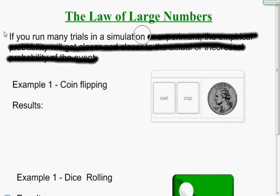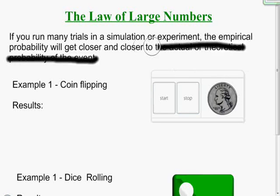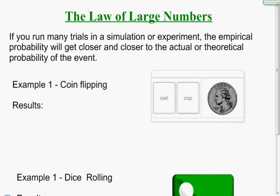If you run many trials in a simulation or experiment, the empirical probability will get closer and closer to the actual or theoretical probability of the event.